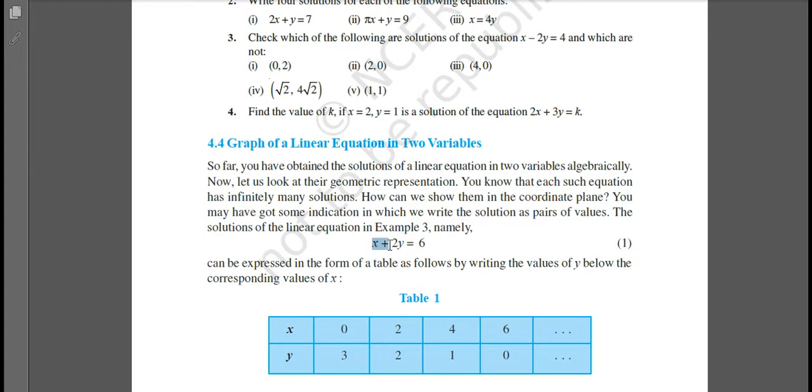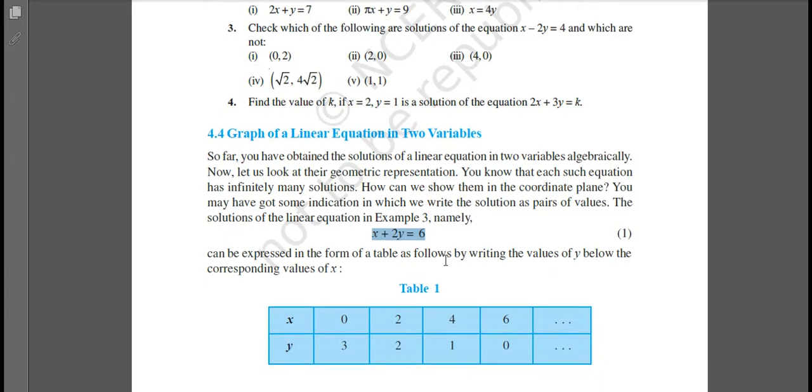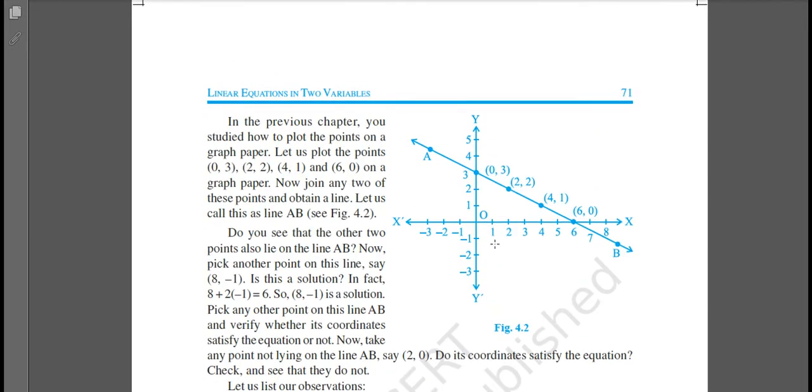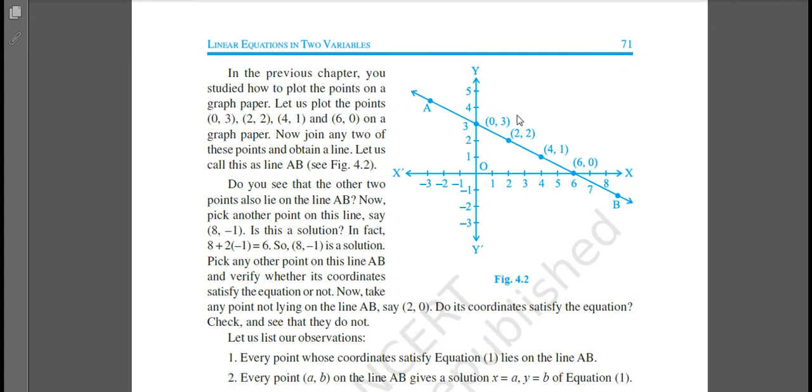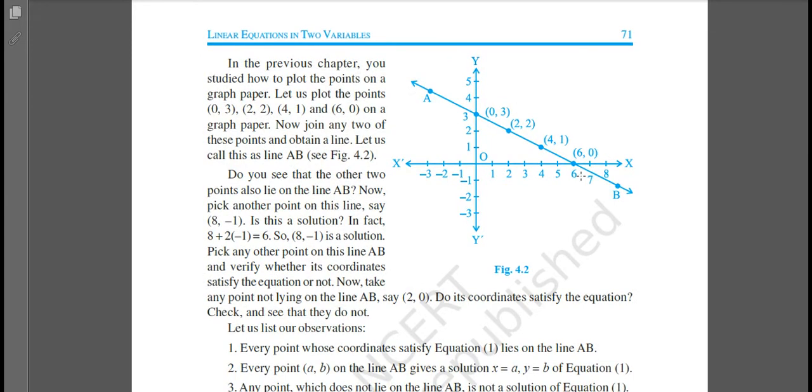Suppose here one example is given: x plus 2y is equal to 6. This is also a linear equation in two variables, x and y. Now by putting x equal to 0 we are getting y equal to 3. We discussed this yesterday in Exercise 4.2. By putting x equal to 2, y is equal to 2. Now we are getting coordinates, pairs of points. If we plot these points, we are getting a straight line. You can see in this figure also.